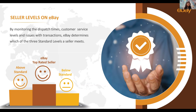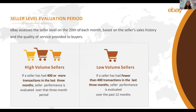Sellers are evaluated and assigned either top-rated seller, above standard, or below standard level. Your performance is evaluated monthly, that is every 20th of the month. The length of time we look at in each evaluation depends on how many recent transactions you have had. If you have had 400 or more transactions in the last three months, you are evaluated over that three-month period. If you have had fewer than 400 transactions in the last three months, then you are evaluated on the past 12 months. These timelines help us evaluate you as fairly as possible.